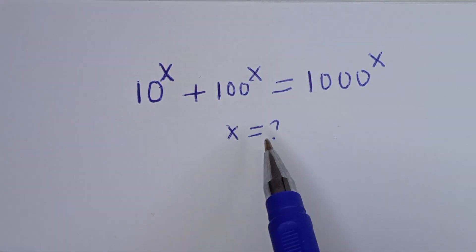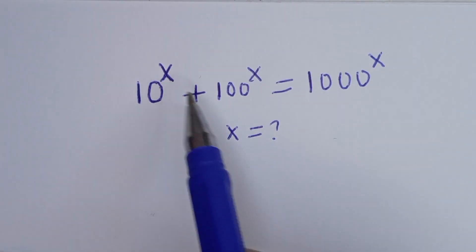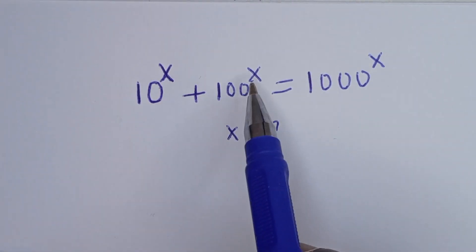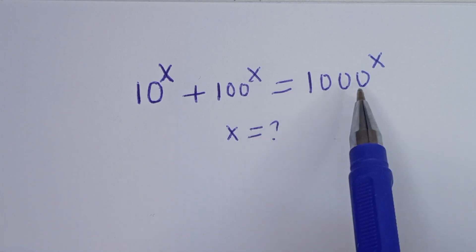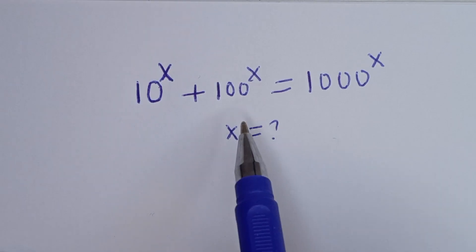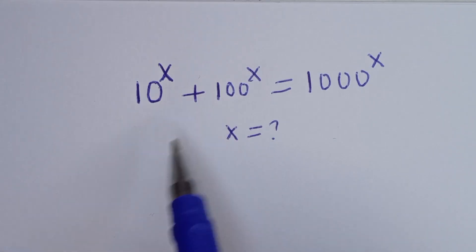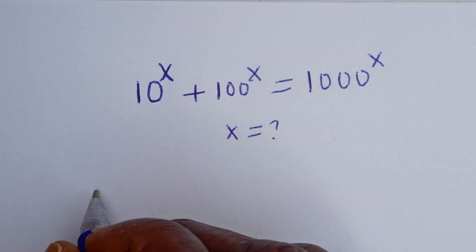Hello. How to solve for S in this equation: 10 to the power of S plus 100 to the power of S is equal to 1000 to the power of S. In this equation we are going to make use of two methods. Let's consider the first method.